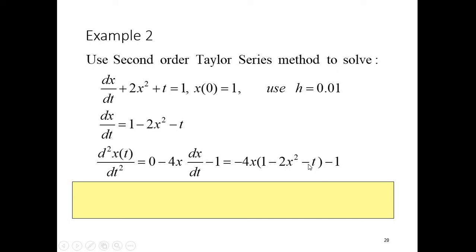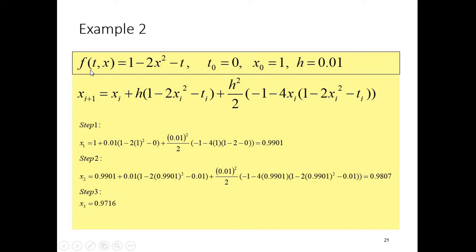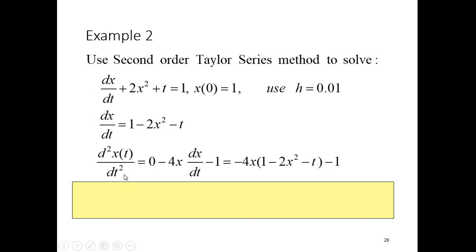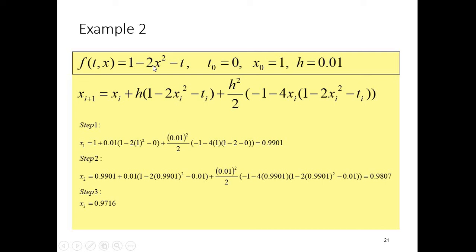If you have forgotten how to apply implicit differentiation, please revise that concept. Substituting dx/dt = 1 − 2x² − t into the second derivative expression gives: d²x/dt² = −4x(1 − 2x² − t) − 1. So f(x, t) = 1 − 2x² − t. At t = 0, x = 1, and h = 0.01.